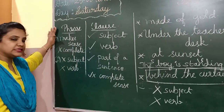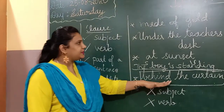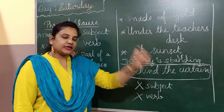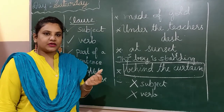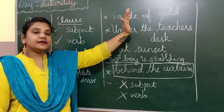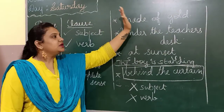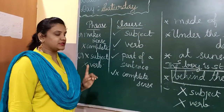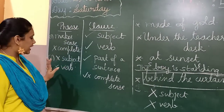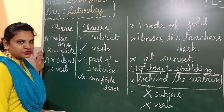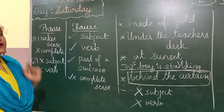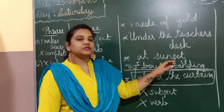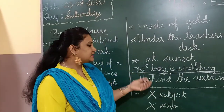I will repeat it again children. A phrase makes sense — when I say 'behind the curtain,' 'made of gold,' 'under the teacher's desk,' 'at sunset' — these are not just some random words. It is a proper sequence of words. It is a partial sequence of words — it is not complete. It makes sense but it doesn't give you complete sense, and it does not have a subject or a verb. You should always remember: the phrase doesn't have a subject and doesn't have a verb, but it makes partial sense.